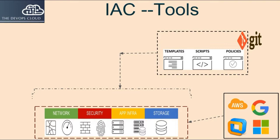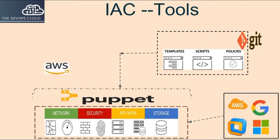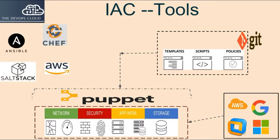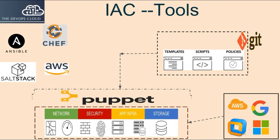Examples of Infrastructure as Code tools include Puppet, AWS CloudFormation, Red Hat Ansible, Chef, and SaltStack. Some tools rely on a domain-specific language, DSL, while others use a standard template format, such as YAML and JSON.